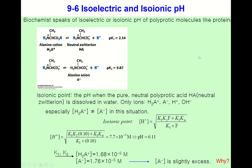Now consider isoelectric and isoionic pH. These are seemingly identical but the differentiation is important — the concept is different. Biochemistry speaks of isoelectric or isoionic pH of polyprotic molecules like proteins, but this concept is not limited to proteins; it can extend to other species.